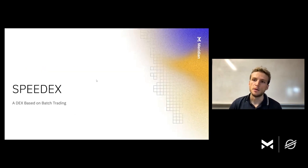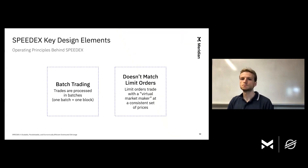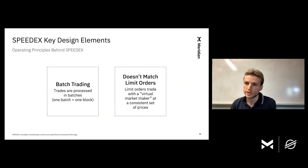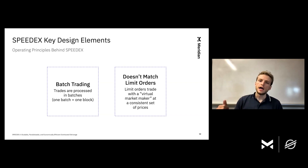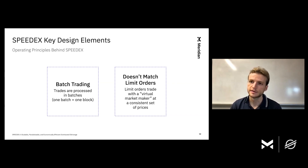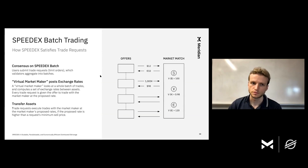Well, the answer is yes, and that design is SpeedX. SpeedX is designed for a DEX that is based on trading large numbers of trades in batches. We're running this in a blockchain, and so we'll process trades block by block. Every block will contain some number of transactions that all create SpeedX requests to trade, and all of the trade requests created in one block will be considered one batch for SpeedX. SpeedX constructs what we'll call a virtual market maker, and this virtual market maker sets a consistent set of asset prices and exchange rates, and limit orders trade with this virtual market maker and not with each other.